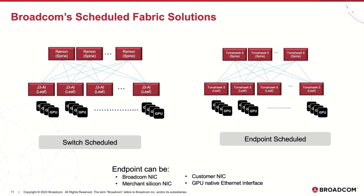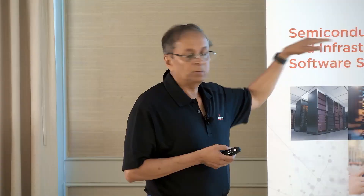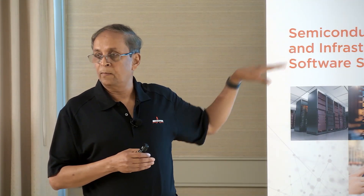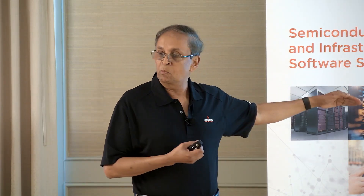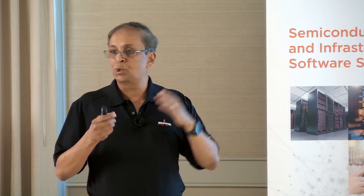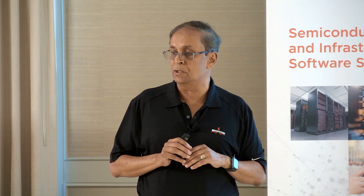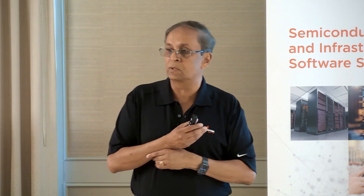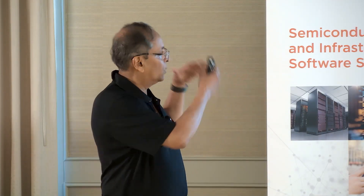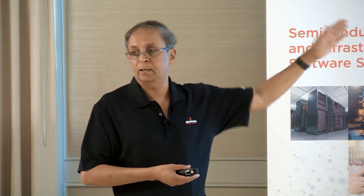The new silicon for switch scheduling is Jericho 3 AI. You don't need anything special at the endpoint at all to take advantage of this — it solves the problem where you don't have strong capability in the endpoint. On the endpoint-scheduled side with Tomahawk 5, everyone must have that capability built into the actual endpoint, though you still need a fabric with high bandwidth, high radix, and load balancing mechanisms. Customers sometimes try to mix the two, but the recommendation is to keep it consistently either switch-scheduled or endpoint-scheduled.